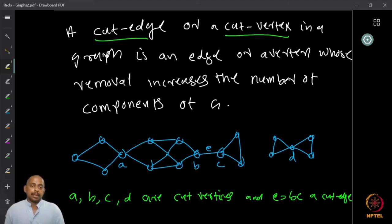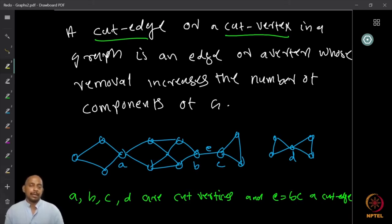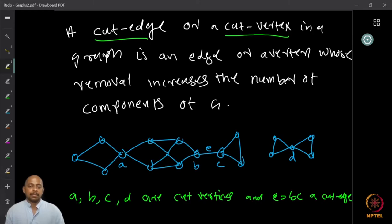A cut edge or a cut vertex in a graph is either an edge or a vertex whose removal increases the number of components. One can modify this slightly by saying it either increases the number of components or produces a trivial vertex. For our purposes, a cut edge or cut vertex is an edge or vertex whose removal increases the number of components.